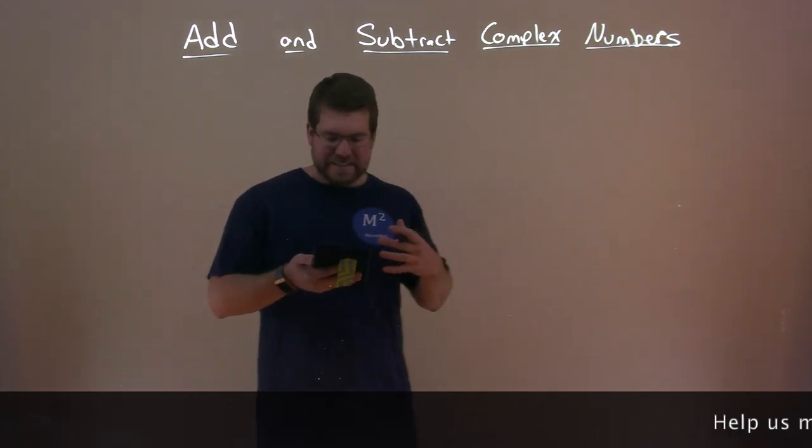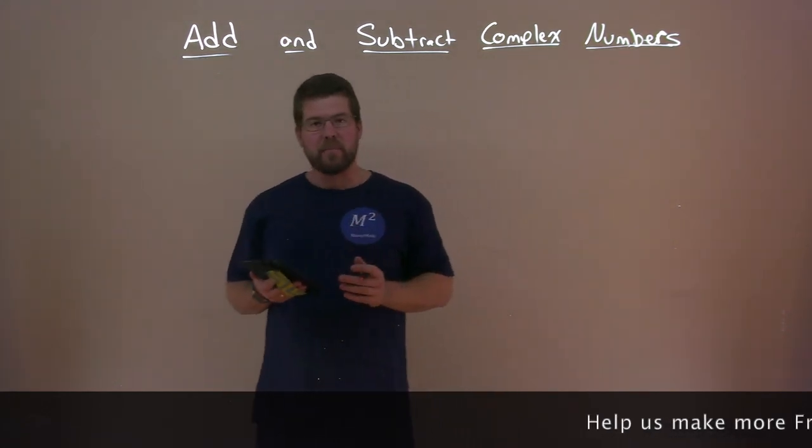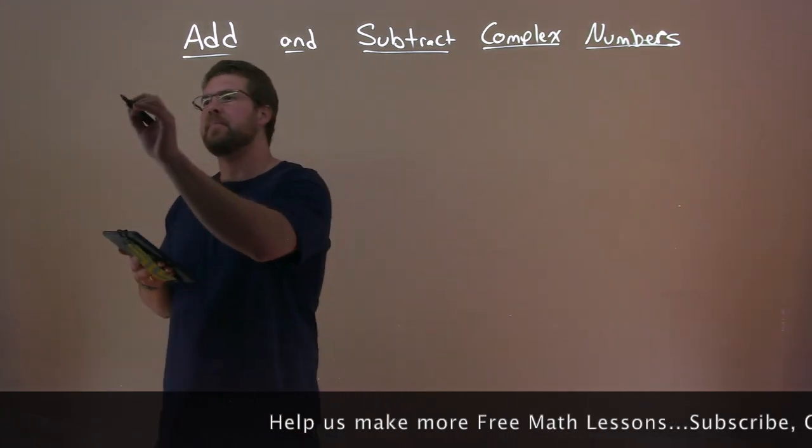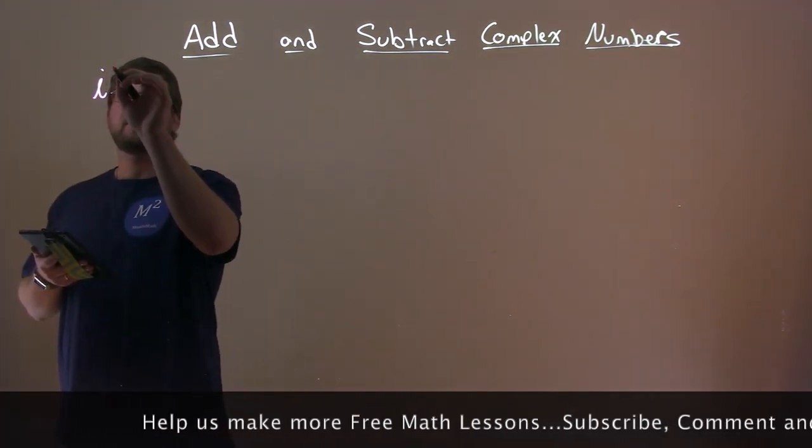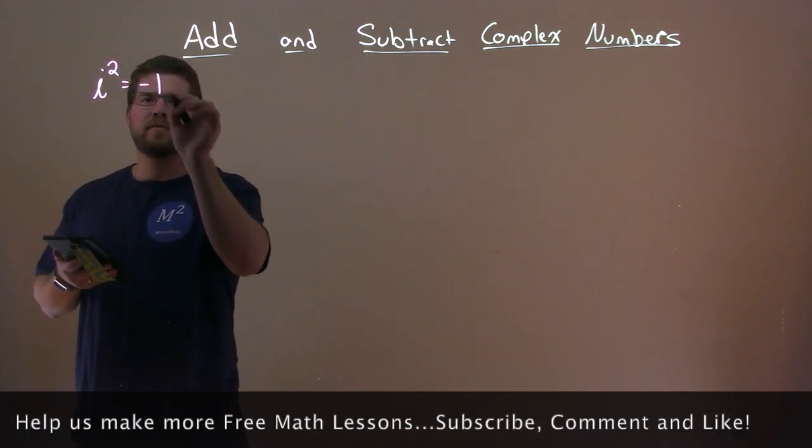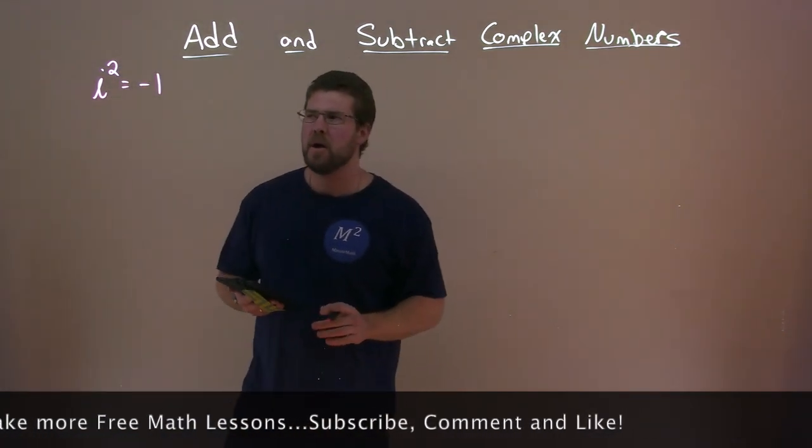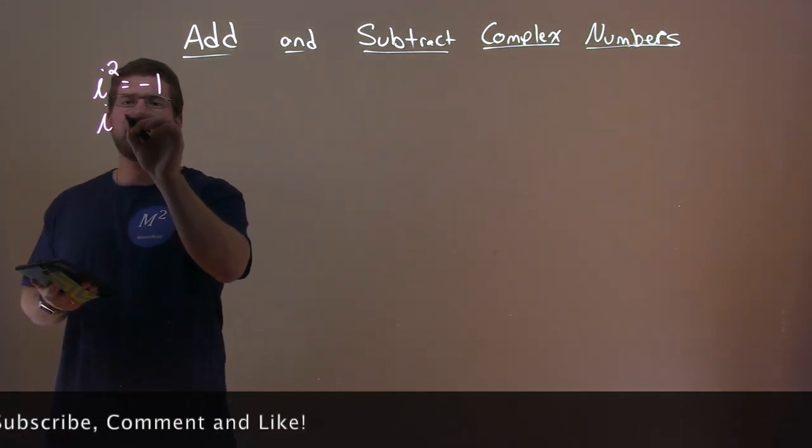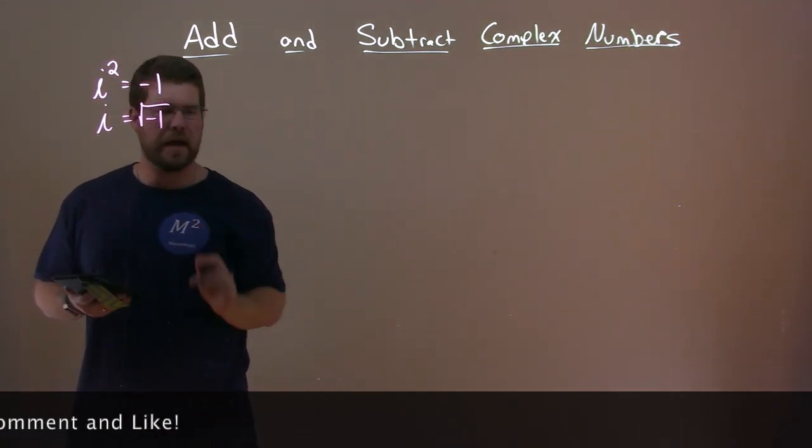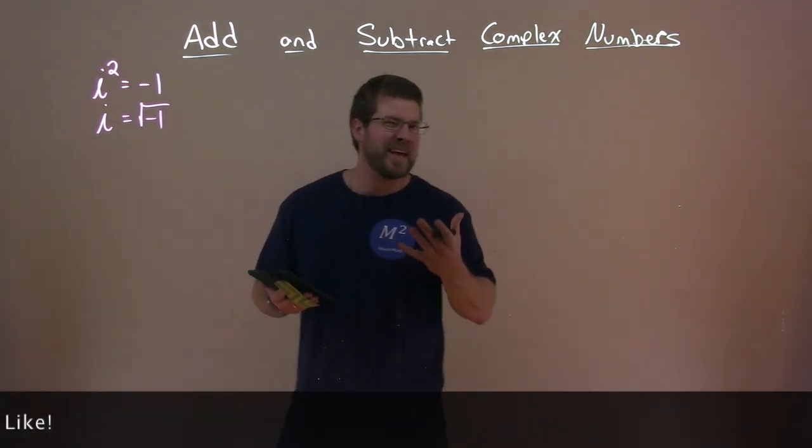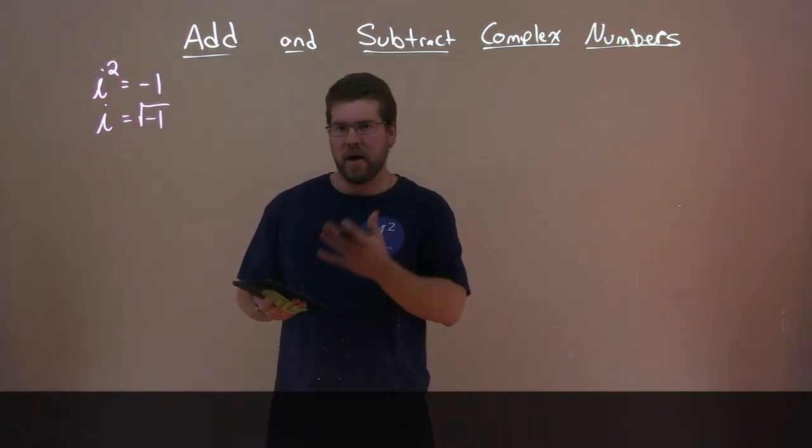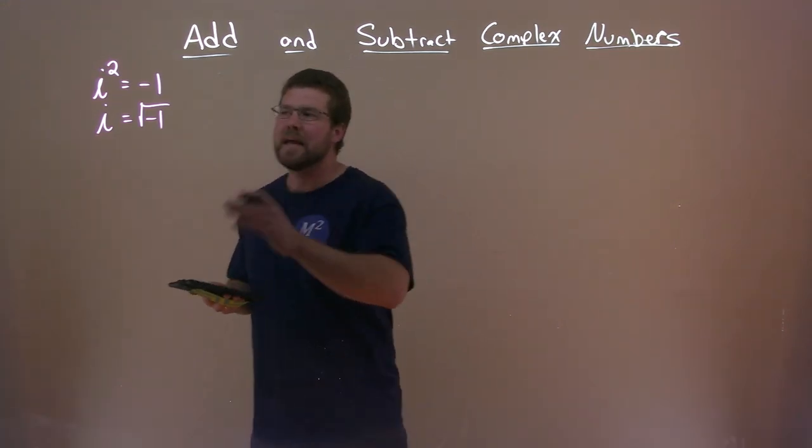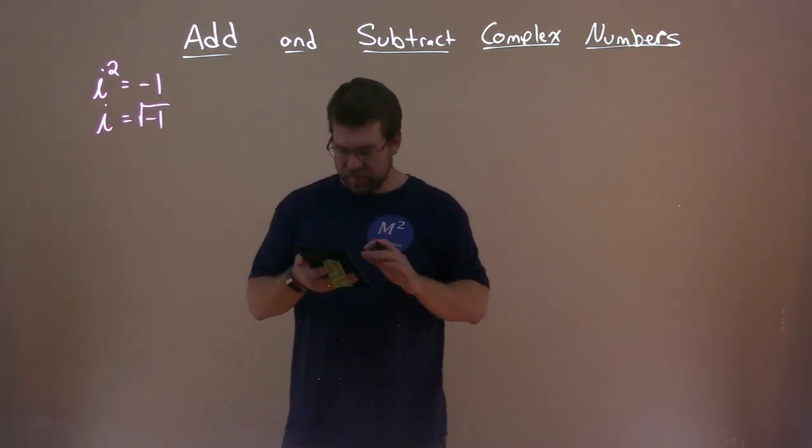So what is a complex number? It really comes down to this little definition: i squared is equal to negative 1. Where does that come from? Well, if I take the square root of both sides, I have i equals the square root of negative 1. And we know that we can't do that in mathematics, but we can if we talk about complex numbers. We label that as i.